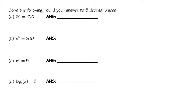For the first one, we have 3 to the x is equal to 200, and you see that the x is in the exponent. So in this case, we have to do logarithm on both sides. 3 to the x is equal to 200, and we have to take log on both sides — specifically log with the base 3.